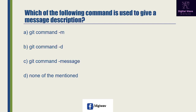Next question: which of the following command is used to give a message description? Option A is 'git commit -m', option B is 'git commit -d', option C is 'git commit --message', and the last option is none of the mentioned. The right answer will be A: git commit -m, because it is used to only update your local repository.